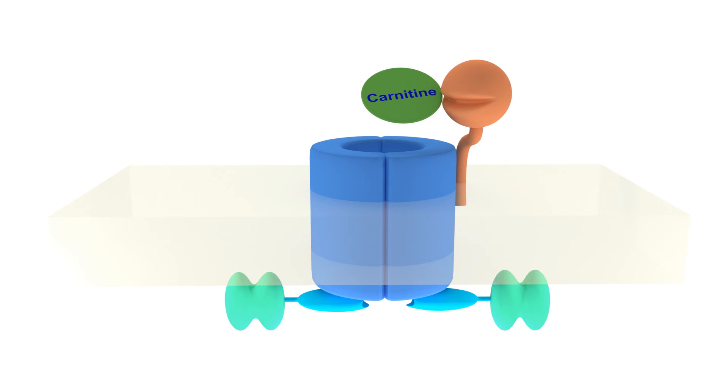Further experiments revealed that the OPUC transporter is able to transport carnitin, whereas glycine betaine and choline are not taken up in significant amounts.